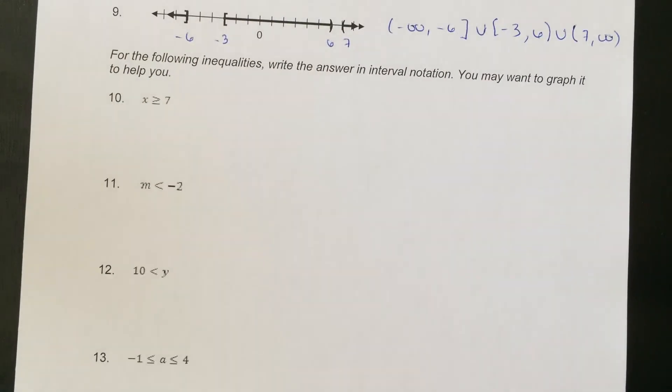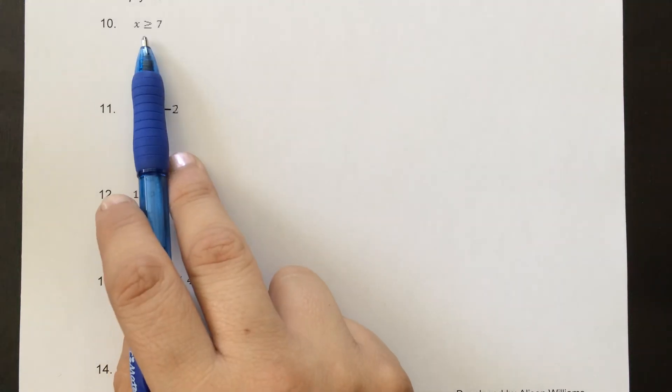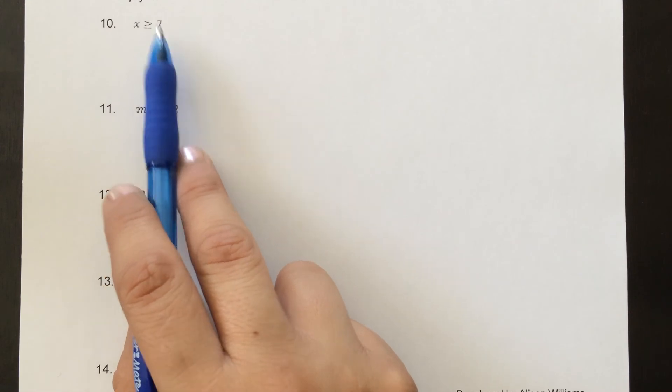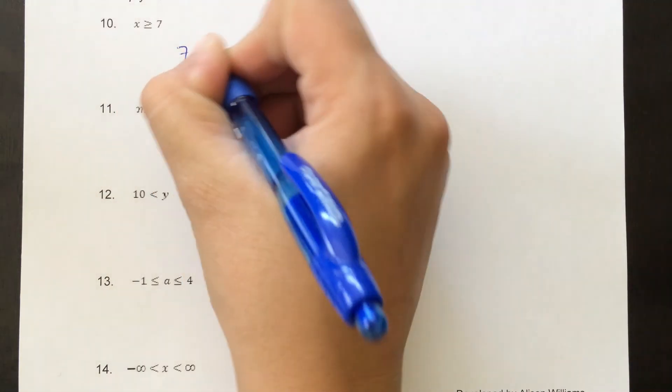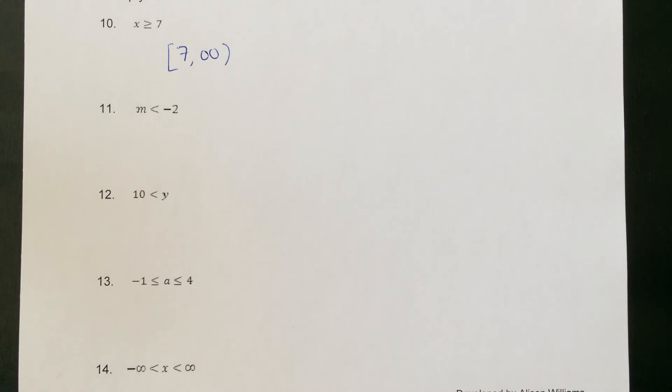Now I want to look at inequalities and write them in interval notation without graphing. For x is bigger than or equal to 7, we're saying all numbers bigger than 7 and it includes 7. So we write from 7 all the way up to positive infinity — bracket around 7 because it's equal to, and parenthesis around positive infinity. That's the interval notation for it.